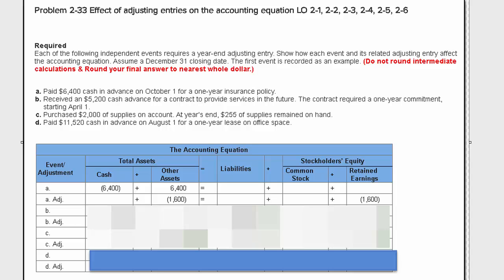Let's take a look at problem 2-33. This one's about determining the effect of adjusting entries on the accounting equation. So what does it tell us? It tells us that each of the following independent events requires a year-end adjusting entry. Show how each event and its related adjusting entry affect the accounting equation. Assume a December 31st closing date, and the first event is recorded as an example.